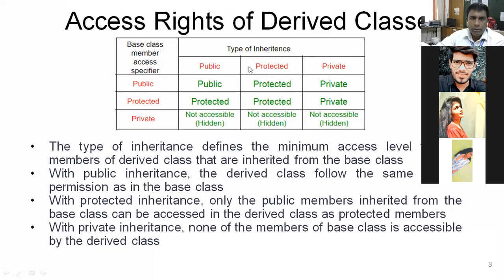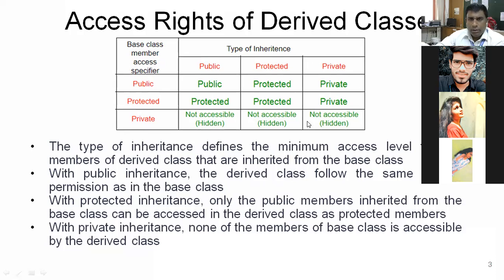If you use protected inheritance to a base class, then all the member functions of the base class will become protected. If we inherit privately to the base class, then all protected members will become private in the derived class. Private members are not accessible in any case to the derived class.